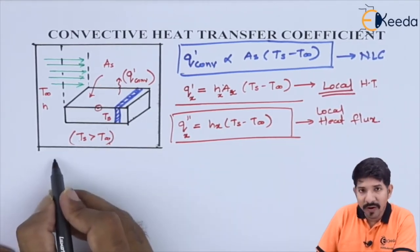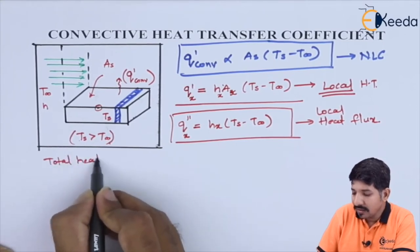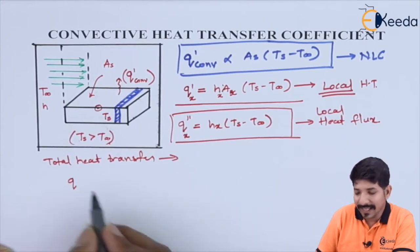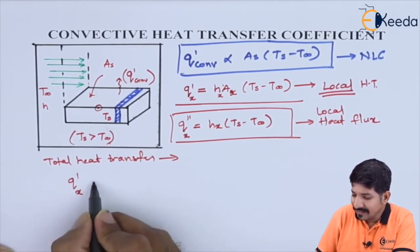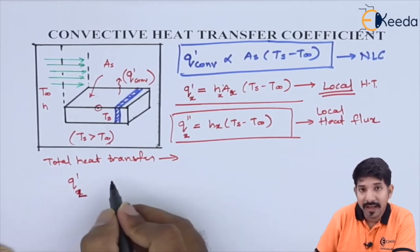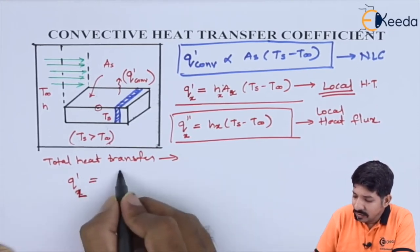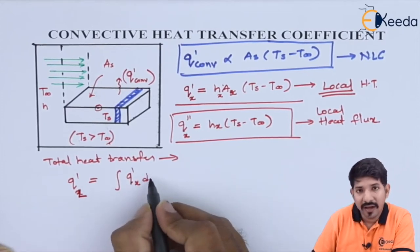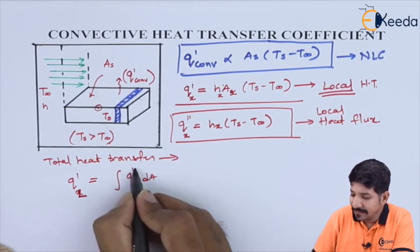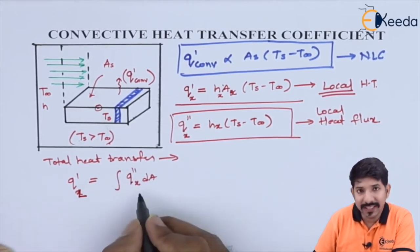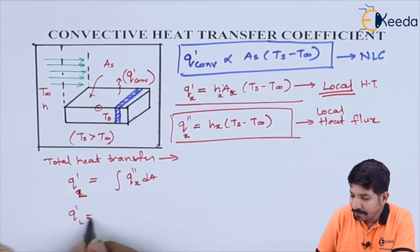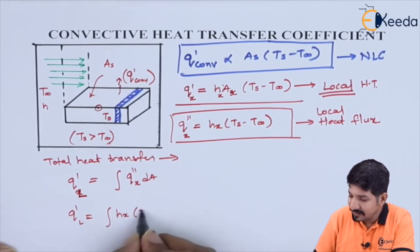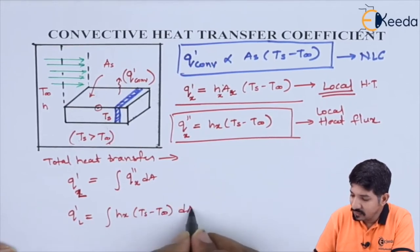If we want the global or total heat transfer Q'L, it can be written as the integral of Q''x over the area: Q'L = ∫ Hx · (Ts − T∞) dA, integrated from 0 to total area A.